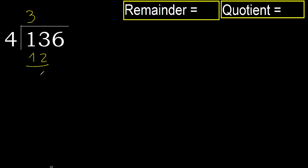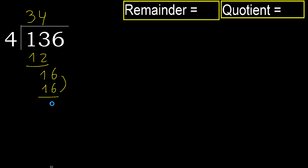Subtract 1, next. 16 — 4 multiplied by 5 is greater, multiply by 4. 16 is not greater, subtract 0. Next.